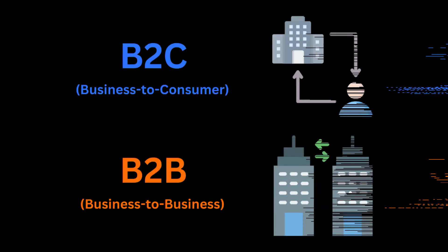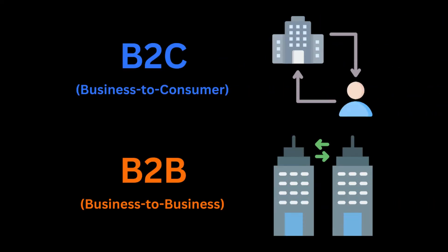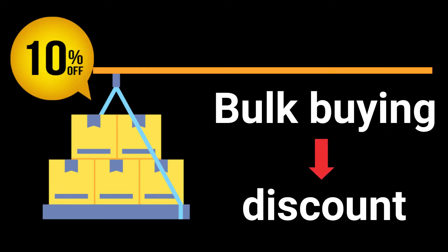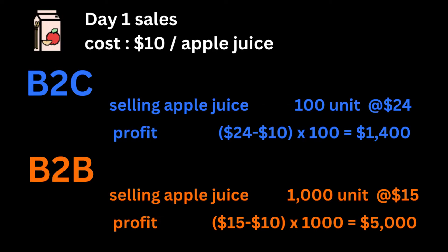Unlike B2C, business to consumer, which targets individual customers, B2B focuses on selling products or services in bulk to other businesses. B2B transactions typically involve larger quantities, leading to bulk discounts. While the profit margin per unit might be lower than retail, the sheer volume ensures substantial total profits.